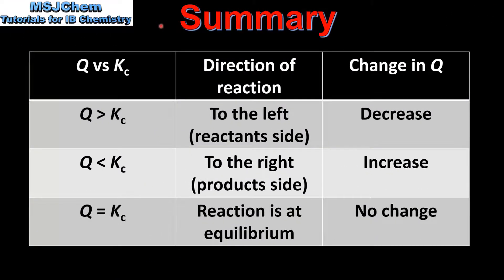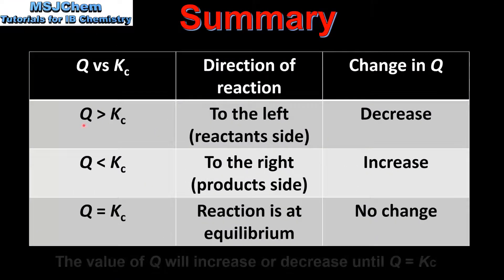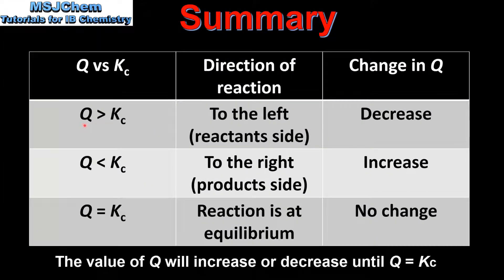So let's end with a summary. If the value of the reaction quotient Q is greater than the value of the equilibrium constant Kc, the reaction will proceed to the left, which is the reactant side, and the value of the reaction quotient Q will decrease.